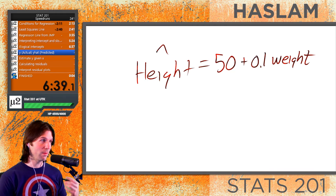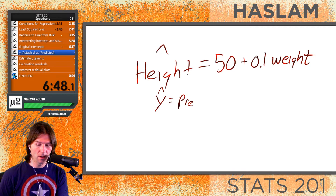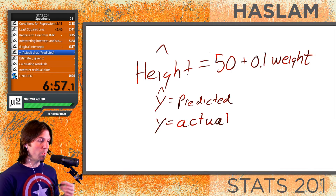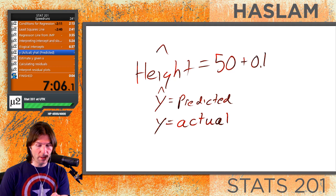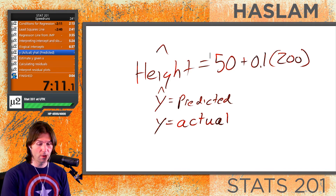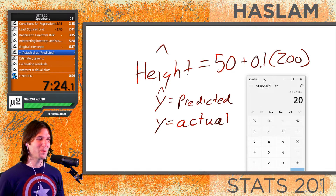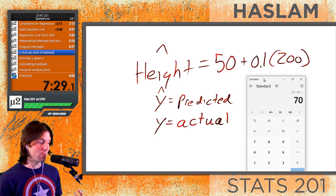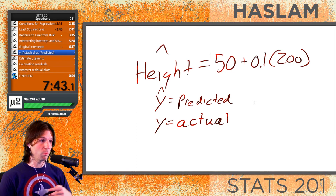Now let's look at Y versus Y-hat. Y-hat is the predicted value — what the equation gives us. If we plug in a weight of 200 pounds: 0.1 × 200 = 20 inches, plus 50, giving Brian's predicted height of 70 inches. So the predicted value is what we get by plugging an X value into the equation.